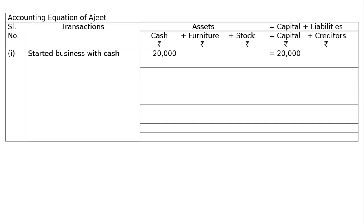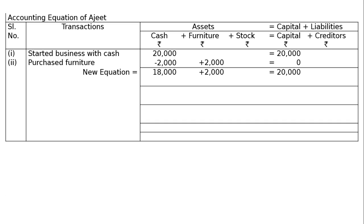The second transaction: he purchased furniture for Rs. 2,000. Cash will be reduced and furniture will increase — one asset is going out and another asset is coming into the business. Cash will be reduced by 2,000 and furniture will increase by 2,000; the net effect is plus minus zero. The new equation after two transactions will be: 18,000 plus 2,000 equals 20,000.